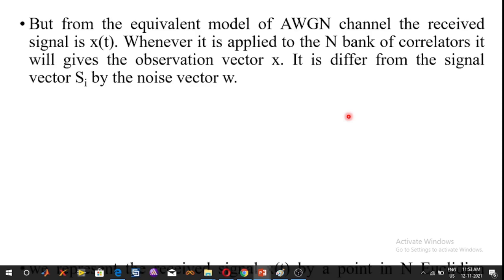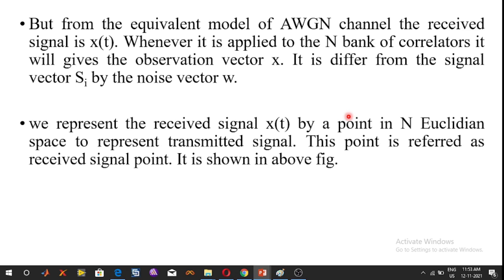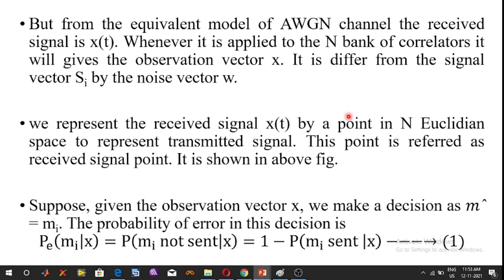Given the observation vector X, we make a decision M̂ = Mi, where Mi is the reconstructed signal output. The probability of error in this decision is given by: P(Mi | X) = P(Mi not sent) = 1 minus P(Mi sent).